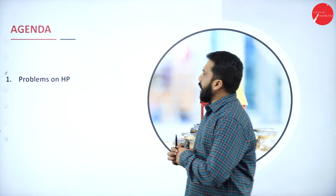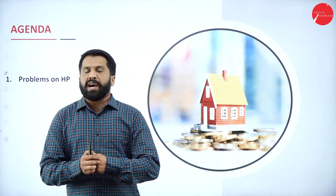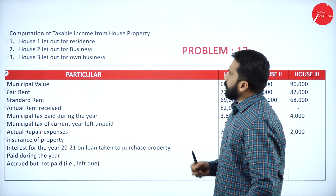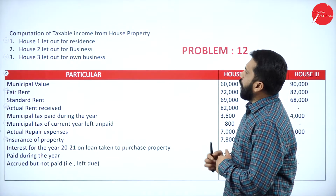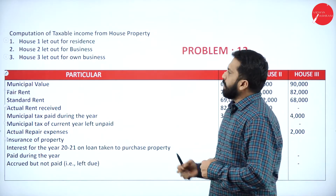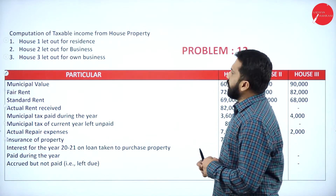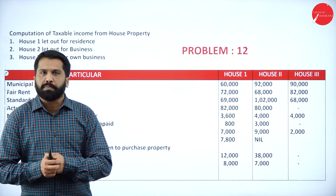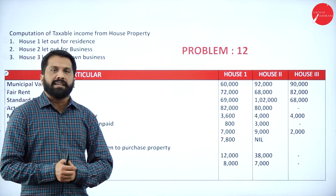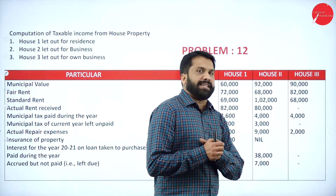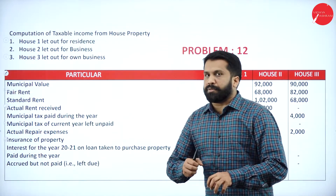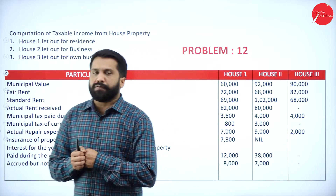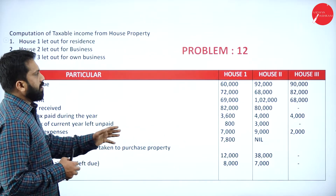The agenda is very simple. We have problems on house property. These are the questions: computation of taxable income from house property. House 1 is let out for residence, House 2 is let out for business, and House 3 is let out for own business. If House 3 is let out for own business, we will not calculate anything — there is no income received from that. If anything is used for your own business, we will not calculate tax for that.